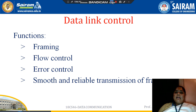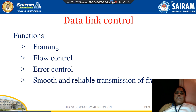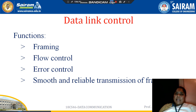Today I am going to explain the Data Link Controller. It basically contains many functions. In our data communication subject, it has only a few functions: framing, flow control, error control, and smooth and reliable transmission of frames. Along with those four methods, there are two extra functions — physical address and access control.